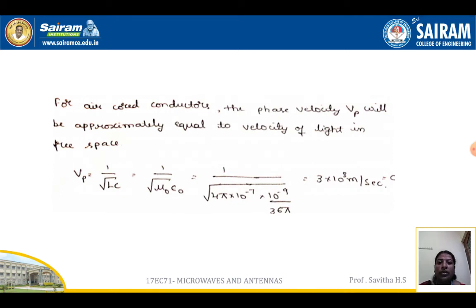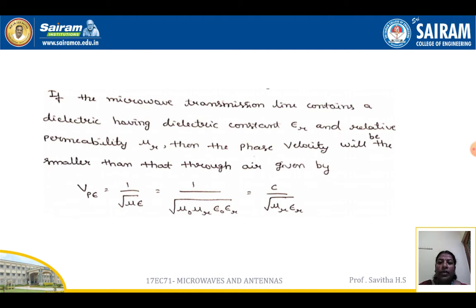For an air-core conductor, the phase velocity vp is approximately equal to the velocity of light in free space: vp equals 1 divided by the square root of LC, which equals 1 divided by the square root of μ₀ε₀. We know that μ₀ is 4π × 10⁻⁷ and ε₀ is 10⁻⁹ divided by 36π, giving a velocity of propagation of 3 × 10⁸ meters per second. If the transmission line contains a dielectric with dielectric constant εr or relative permeability μr, the phase velocity is smaller, given by vp(ε) equal to 1 divided by the square root of με.